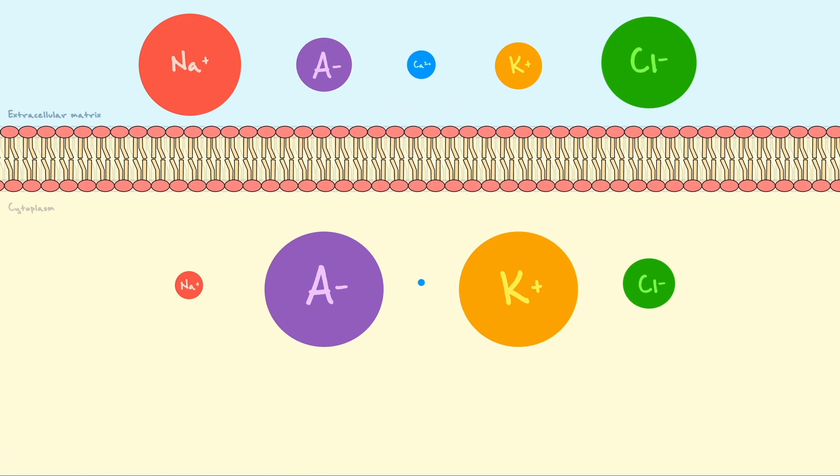Now, an important detail we have not discussed yet is how exactly do the ions end up distributed the way they are, and most importantly, how is this distribution maintained across the membrane.